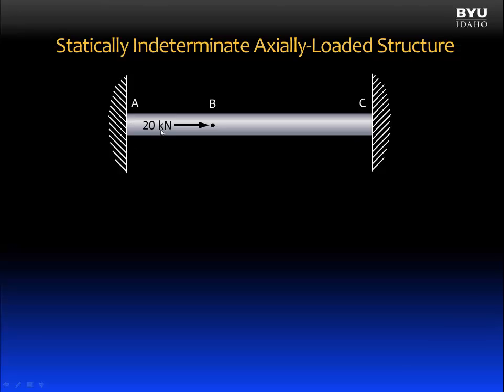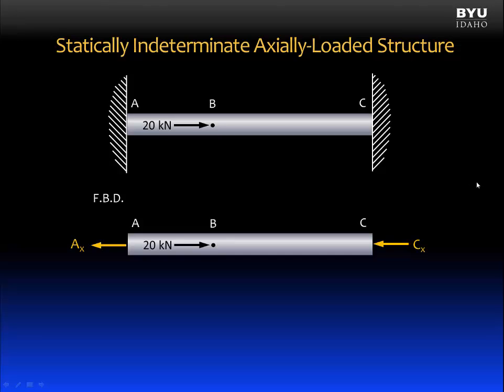There is a point load of 20 kilonewtons acting at B. If I draw a free body diagram of this structure, it will look like this. I have a reaction at A that is counteracting this applied load of 20 kilonewtons and a reaction at C that is also countering this applied load.